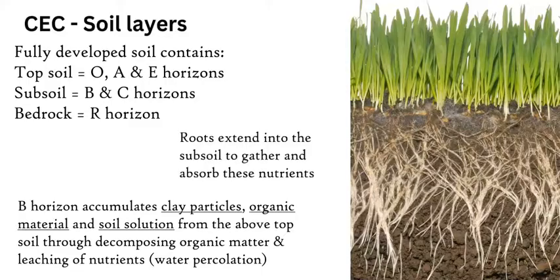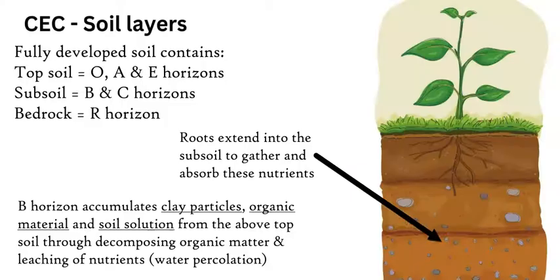We have to discuss soil layers — the profile and the horizons of the soil. It depends on the maturity of the soil and how long it has had to form, whether it has a full five horizons from the O down to the R, or just a couple. There is percolation, leaching, and infiltration of water. Leaching is the removal and translocation of nutrients down through gravity to a subsoil layer like the B horizon, where clay colloids accumulate along with much of the organic material.